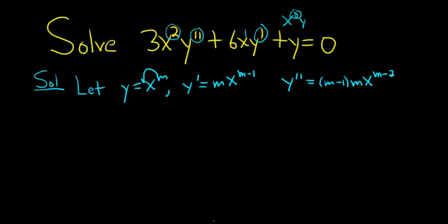Now we plug everything into our differential equation. So we have 3x squared. And then we have y double prime, which was m minus 1, mx to the m minus 2, plus 6x. That's this piece here.